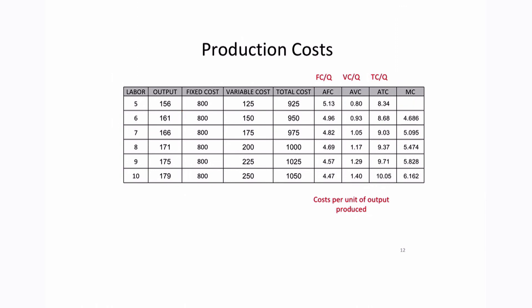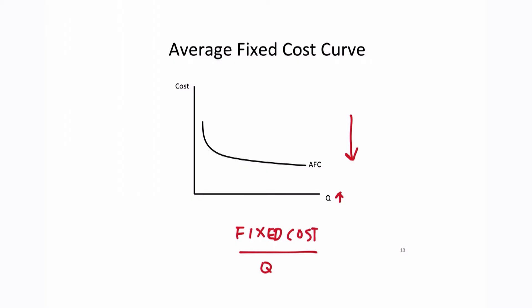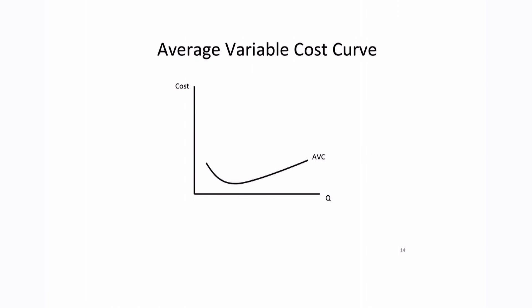If we graph these per-unit costs, we get the following cost curves. The average fixed cost — fixed cost divided by quantity — is falling as quantity rises, because the $800 cost per machine becomes smaller and smaller per unit as we produce more. On the other hand, average variable cost, the variable cost per unit produced, is rising as quantity rises, because we are hiring more and more workers to produce the additional output.